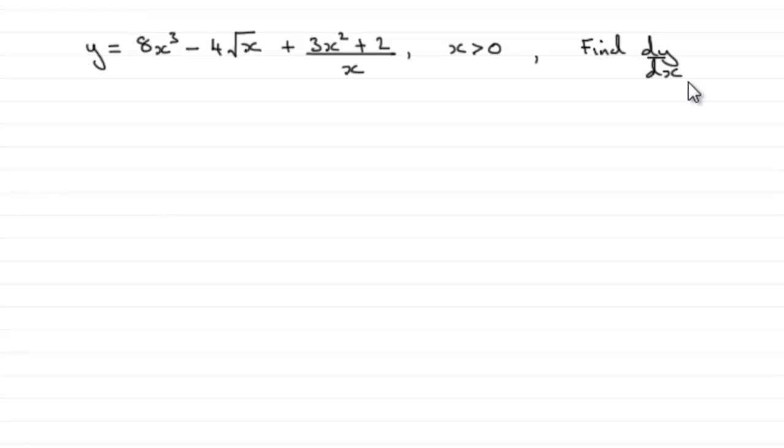So how do we go about finding dy by dx? Well, first of all, we've got to get all of these terms into the form ax to the power n, terms like this. And that means changing this one and this term.